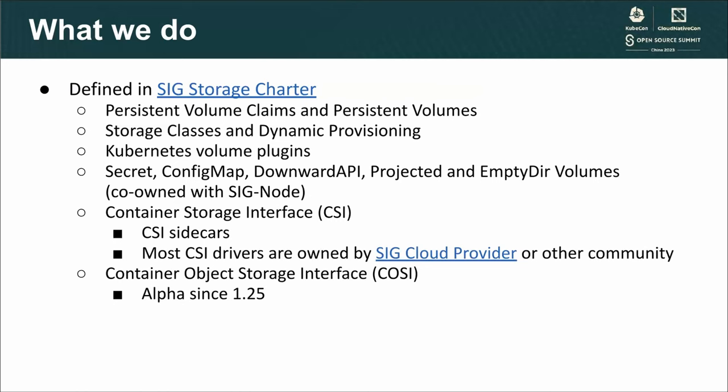CSI is for block and file storage. We also have an alpha feature, COSI, that supports object storage.